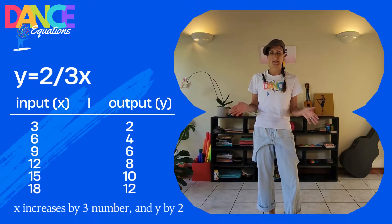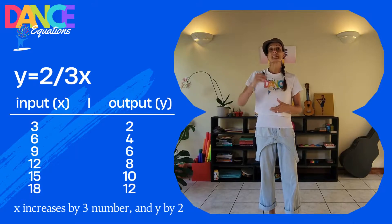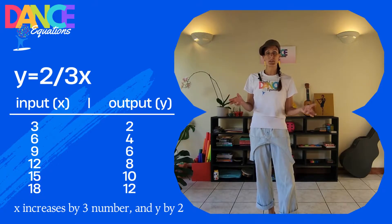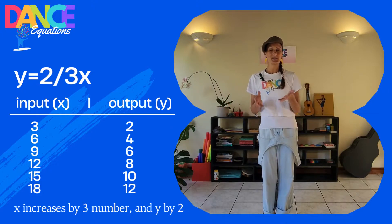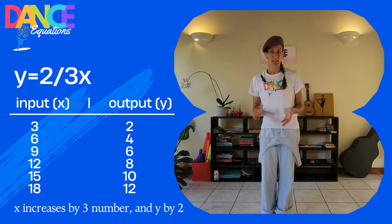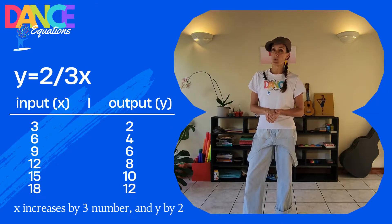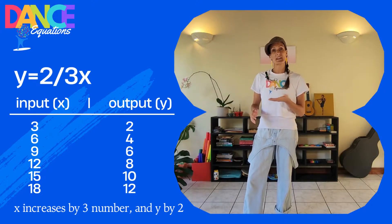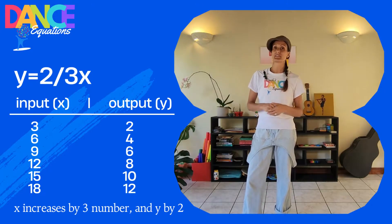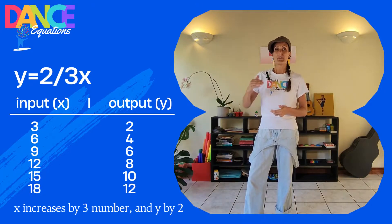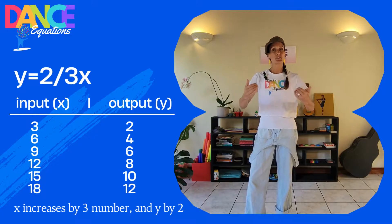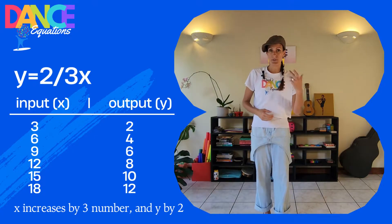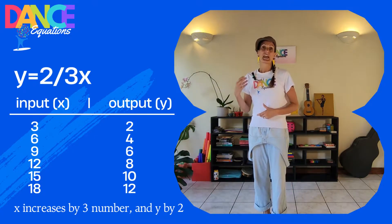There are several ways in which dance and math can connect, and one way we're going to look at today is just through a simple coordination. If we take a line function like y equals 2/3x, we have the x coordinate increasing on 3 and the y on 2. So we can translate that to movement with a motion on 3 and 2.